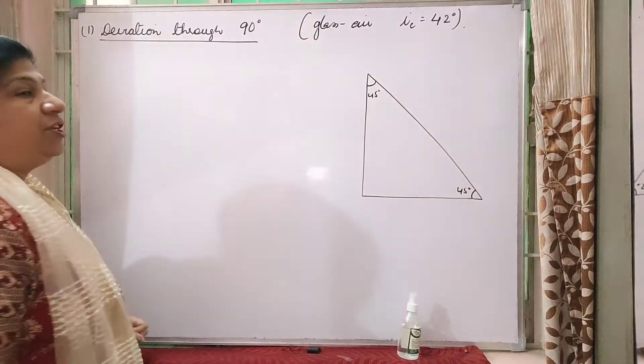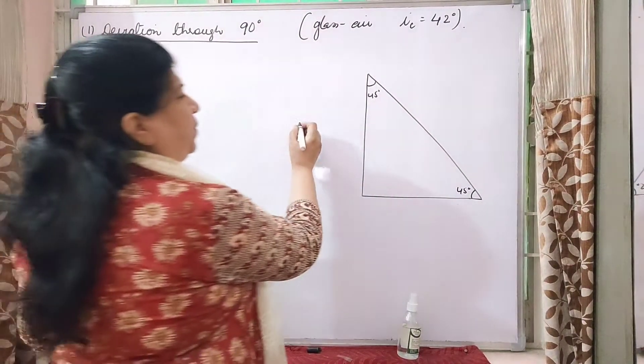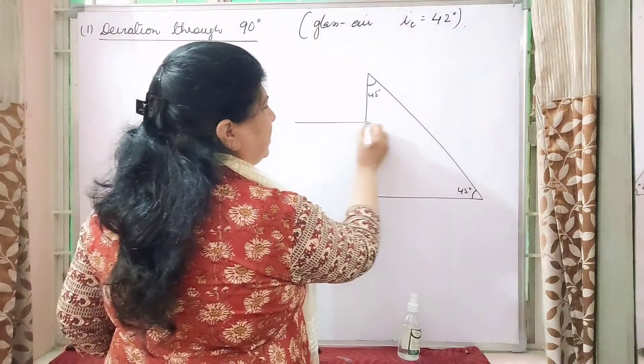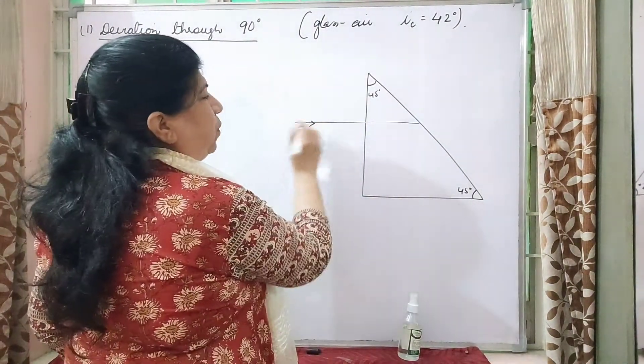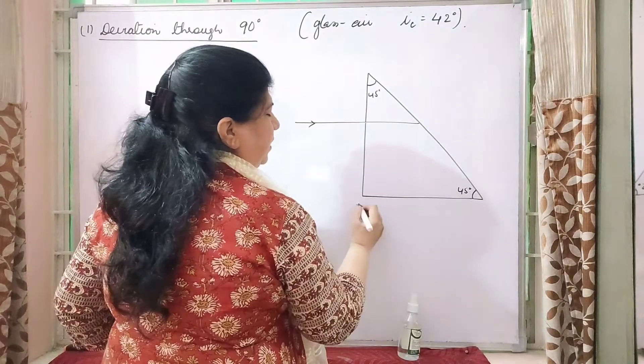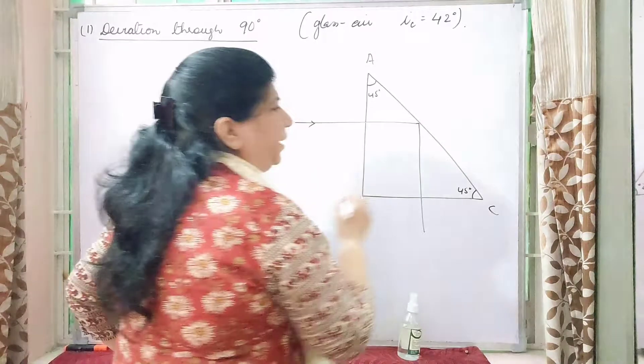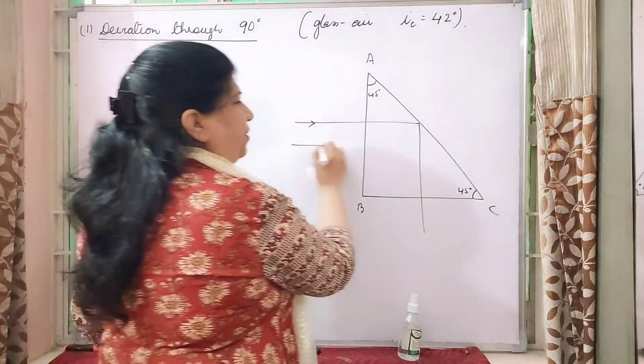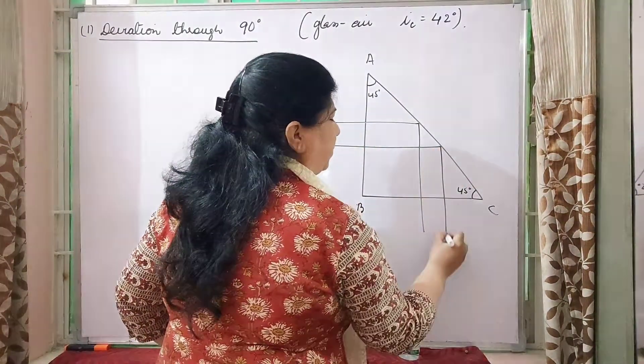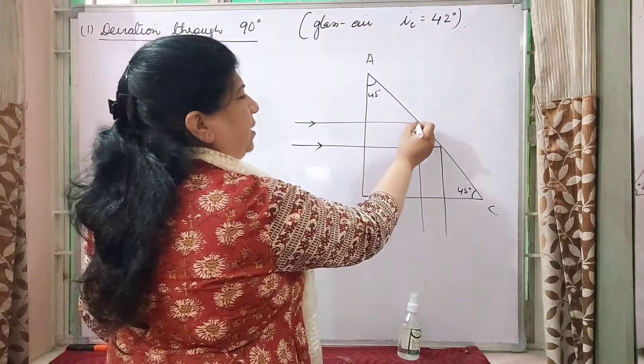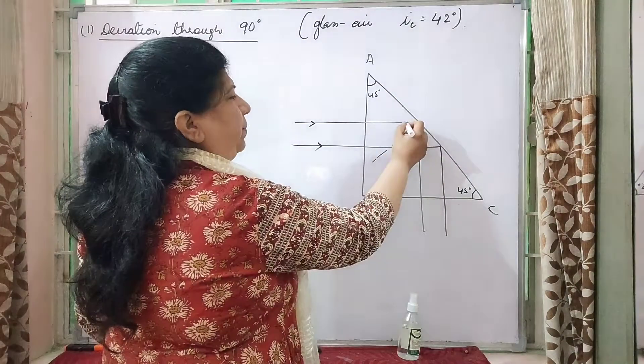So the deviation through 90 degree is suppose two light rays are coming. One is like this. When it is going parallel to this line let us name it as ABC. This is going to be perpendicularly coming down. The other light ray moving here is again going to come down perpendicularly. The angle here will be 45.